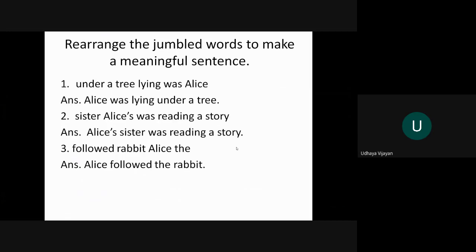Under a tree lying was Alice. You have to make a meaningful sentence. Under a tree lying was Alice. It doesn't make a meaning. So we have to put them in order so that it makes a meaningful sentence. So the answer is Alice was lying under a tree.